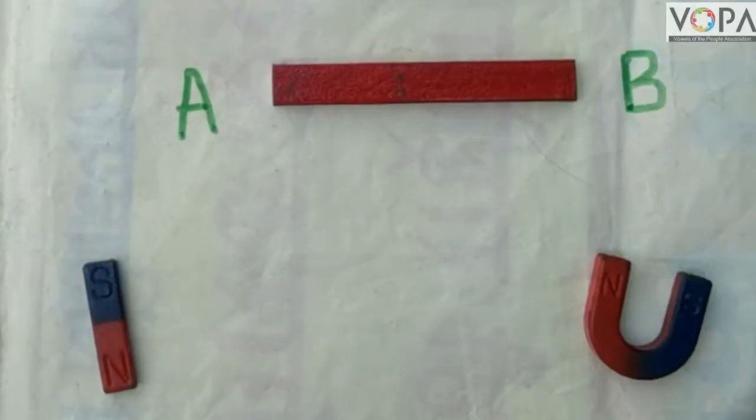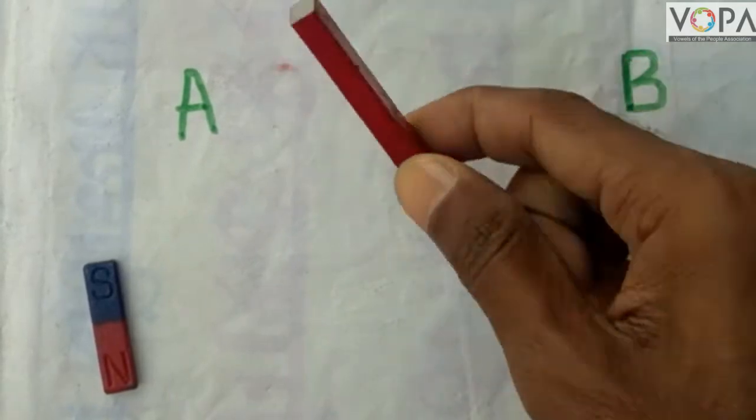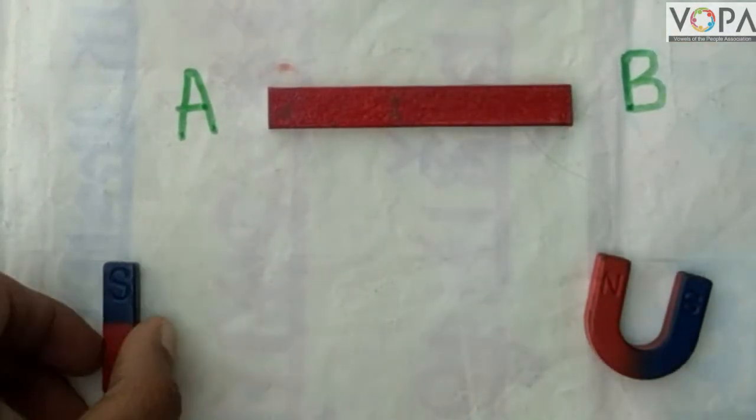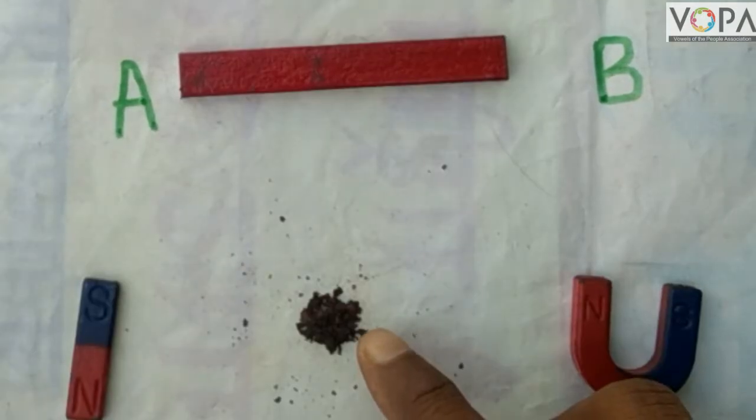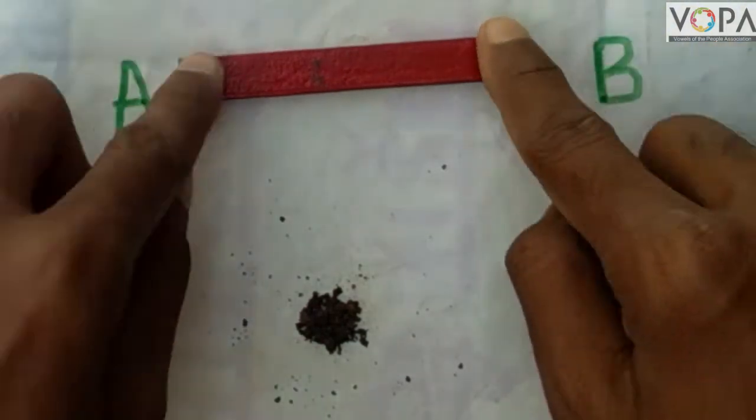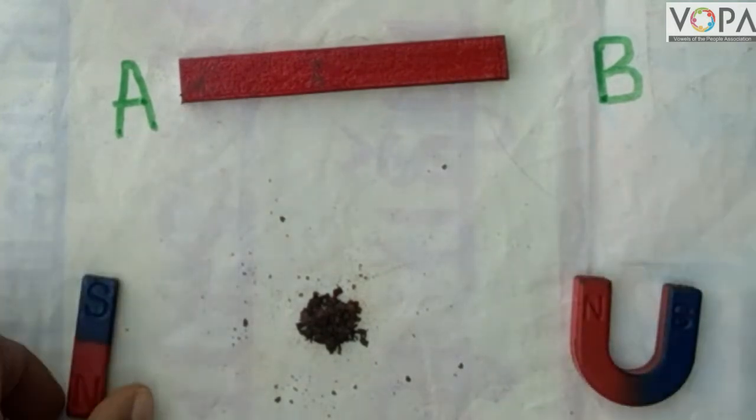Hi dear students, now we will do here one activity. For that activity we need a steel bar, this is a steel bar, a bar magnet, iron fillings, etc. Now take a steel bar A B on a table.